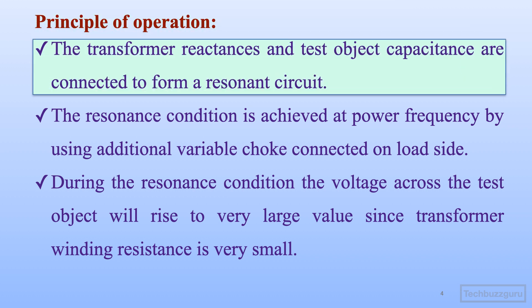The transformer reactances — the leakage reactances — and test object capacitances are connected to form a resonant circuit. This resonance can be either series resonance or parallel resonance. The equivalent leakage reactances of the transformer, along with the circuit capacitance — that is, the capacitance of the test object and transformer bushings — form a resonant circuit.